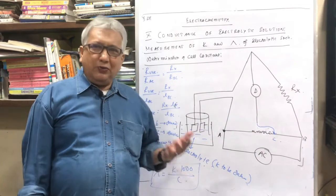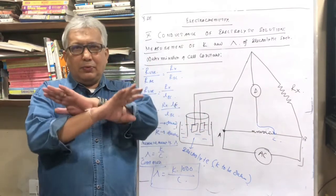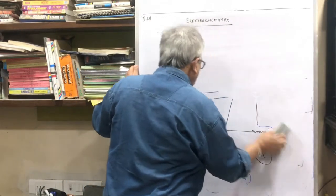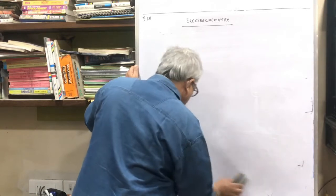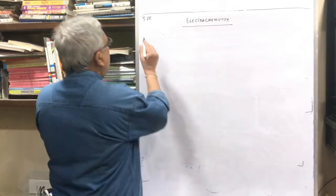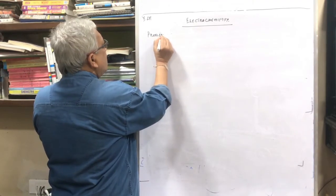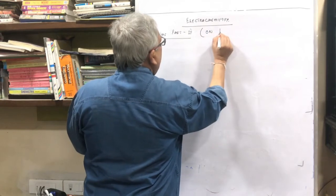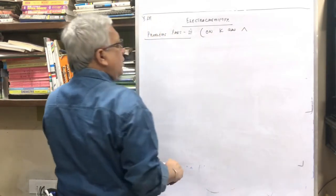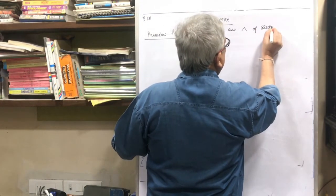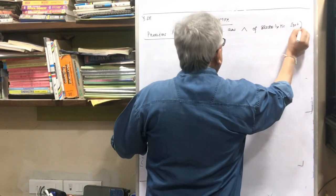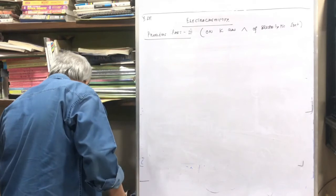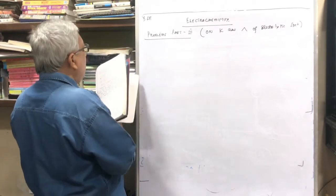Students, let's get into the last part of electrochemistry. The chapter is over and this is numericals part 3 — problems on conductance of electrolytic solution, specifically on K and lambda, that is conductivity and molar conductivity of electrolytic solution. In the PDF notes this is on page number 66. Let's go for problem number 28.